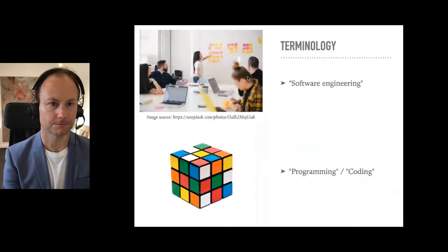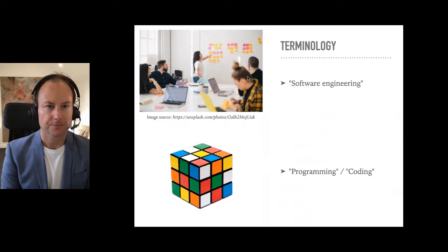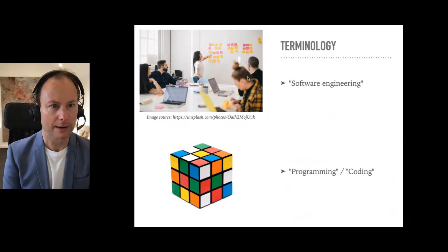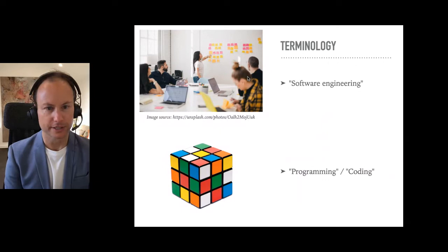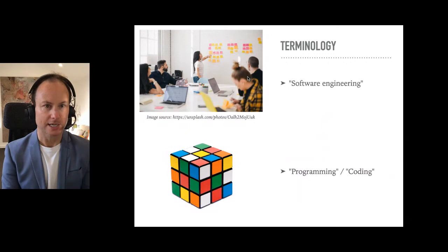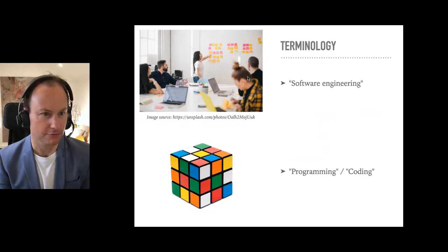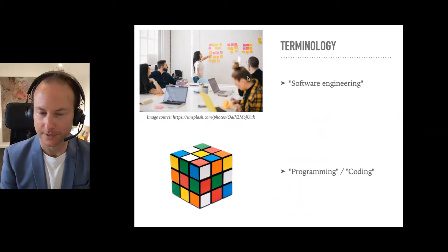Some terminology first: software engineering is really a cross-disciplinary field. It involves programming as one part. I'd use the terms programming and coding interchangeably in this talk. I think of programming as being quite a different exercise than the broader concept of software engineering. Programming itself is more like solving a Rubik's cube — it's an abstract puzzle-solving problem. It can be quite mathematical. It's really about how to design abstract concepts to allow a particular problem to be solved.